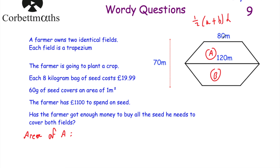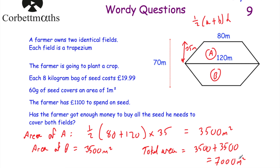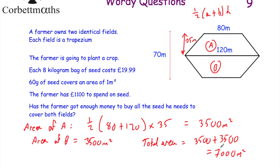So area of trapezium A = ½(80 + 120) × 35. On the calculator: ½ × 200 × 35 = 3,500m². Field B is identical, so its area is also 3,500m². Total area = 3,500 + 3,500 = 7,000m². Now we know 60g of seed covers 1m², so for 7,000m² the farmer needs 60 × 7,000 = 420,000g. Converting to kilograms: 420,000 ÷ 1,000 = 420kg of seed needed.